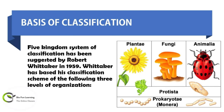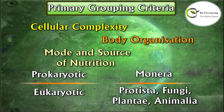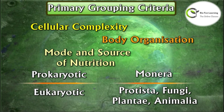Robert Whittaker in 1959 suggested the five kingdom system of classification. This classification is based on three things: first, cellular complexity — primitive cells without nucleus or developed cells with nucleus; second, body organization — single-celled or multicellular body; and third, mode and source of nutrition — autotrophic or heterotrophic. On these three bases, it is divided into prokaryotic Monera and eukaryotic Protista, Fungi, Plantae, and Animalia.